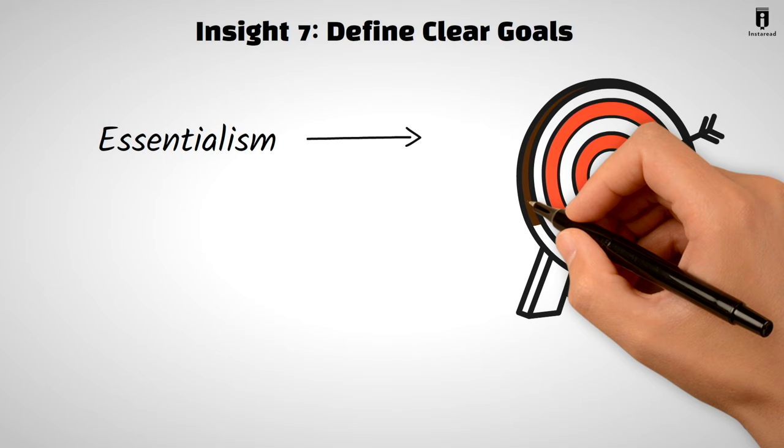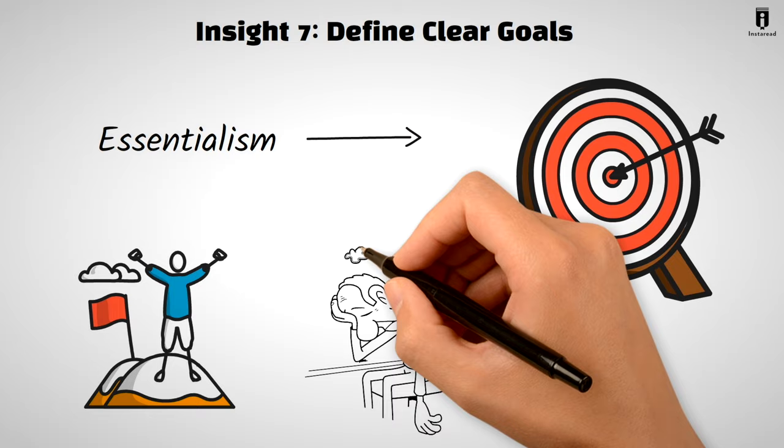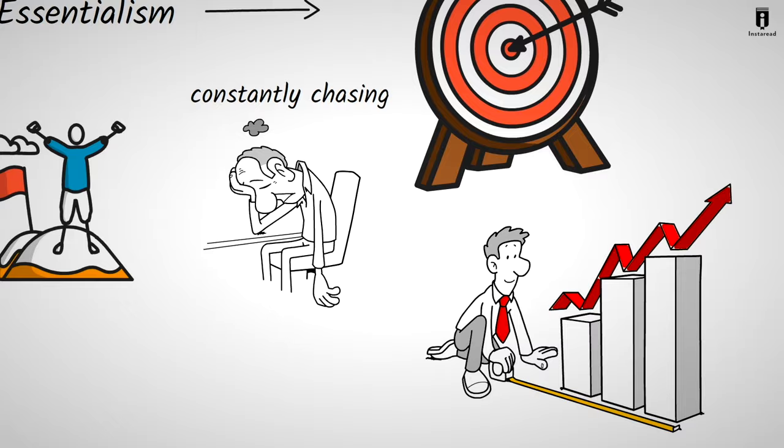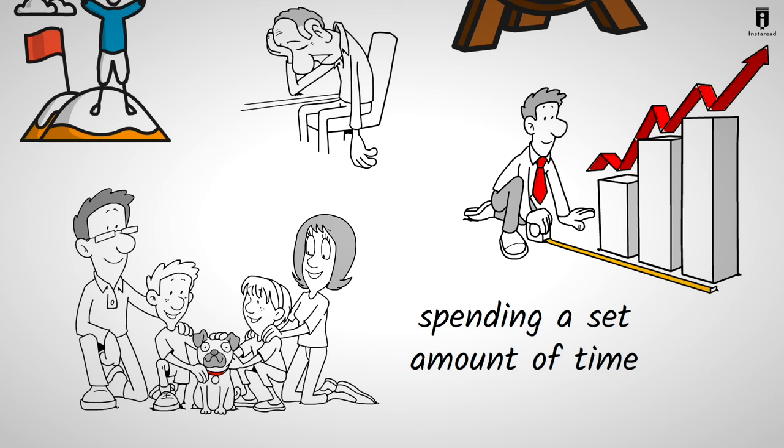Insight 7. Define Clear Goals. Essentialism requires clear goals. Vague mission statements don't cut it. If you can't define when a goal is accomplished, you'll constantly be chasing an elusive target. Even for personal priorities, set measurable goals. If family is a priority, define specific actions like spending a set amount of time with loved ones or attending important events.